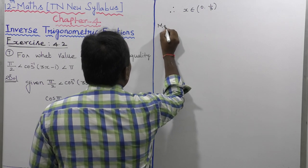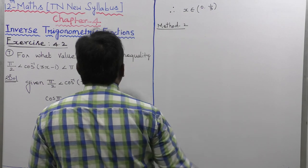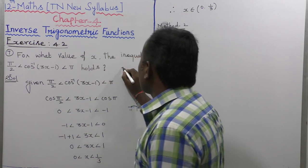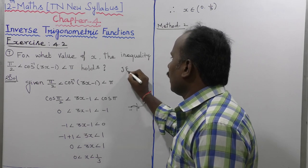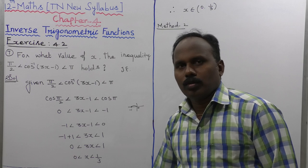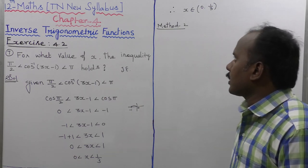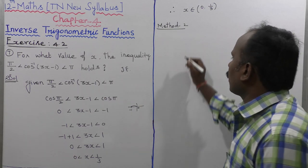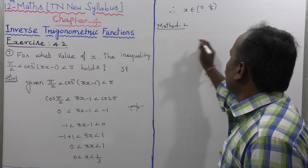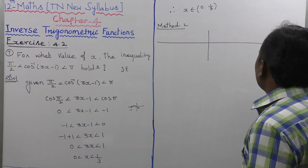That is enough for the answer. Now for method number 2 — these are JEE-level questions and IIT model questions. So I am going to discuss the graphical method. Let's look at the cos inverse of x diagram and the status of x.